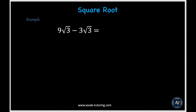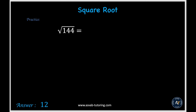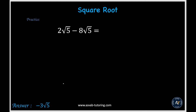Let's do another one — this time subtraction. Same way, just subtract the whole numbers: 9 minus 3 is 6 square root of 3. Here is a practice problem; you try by yourself and make sure that you get the same answer. There is another example and another practice problem — try by yourself.